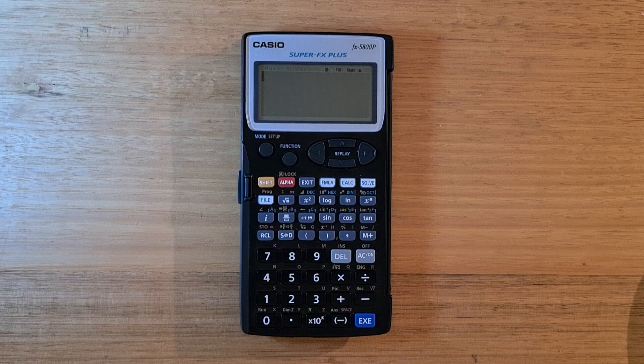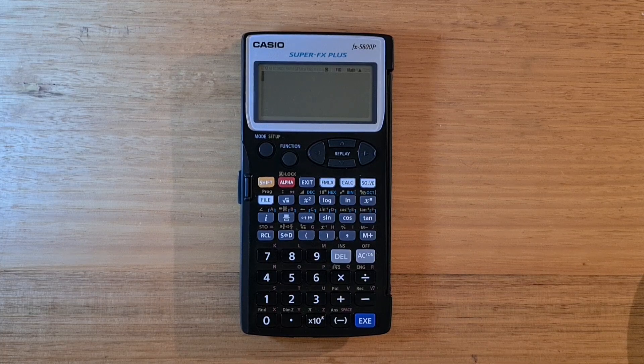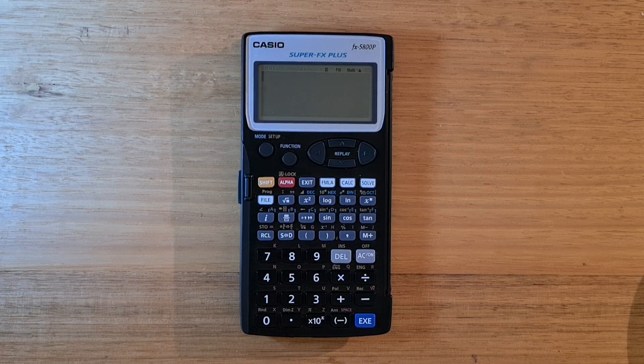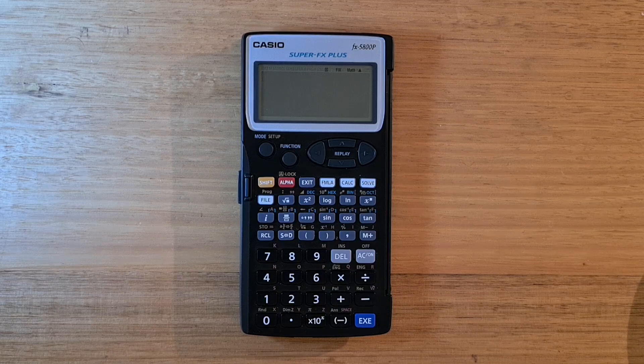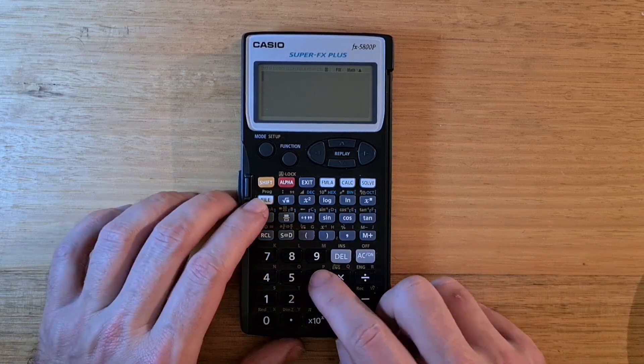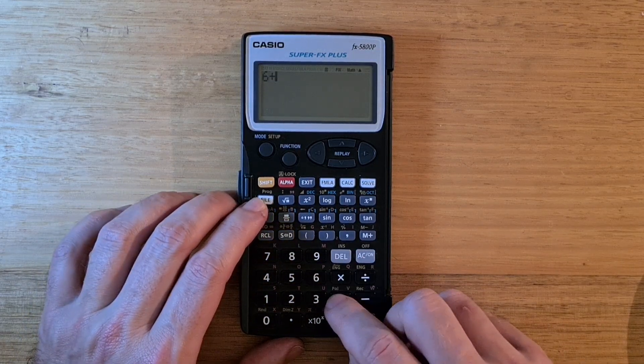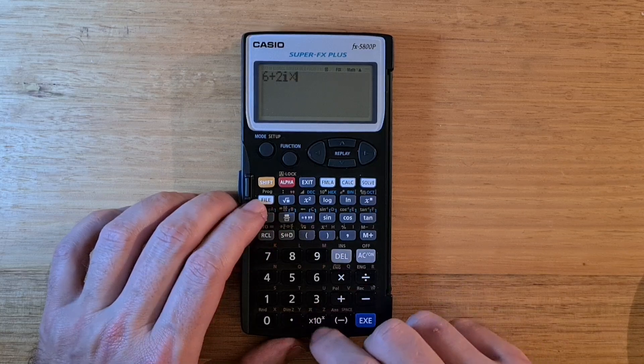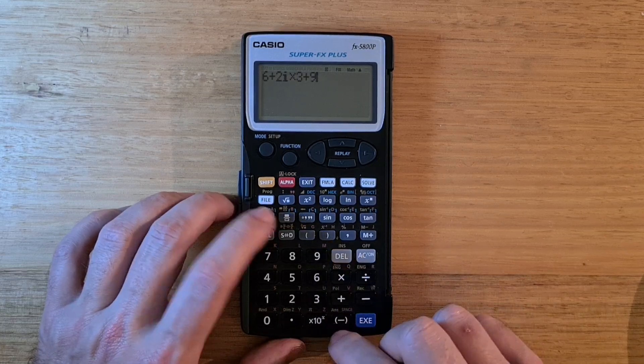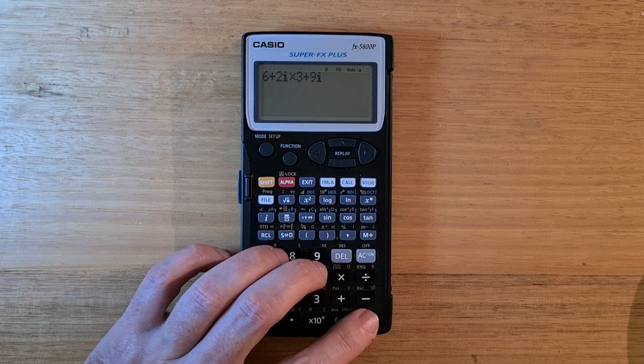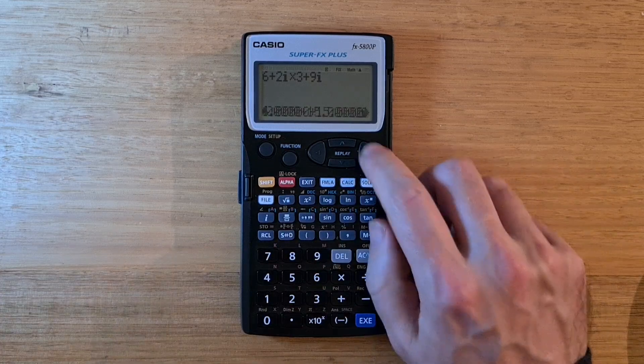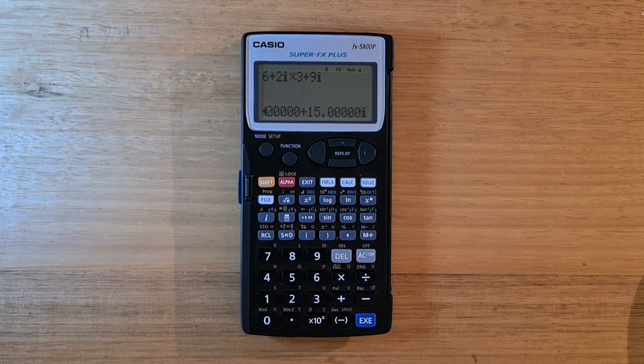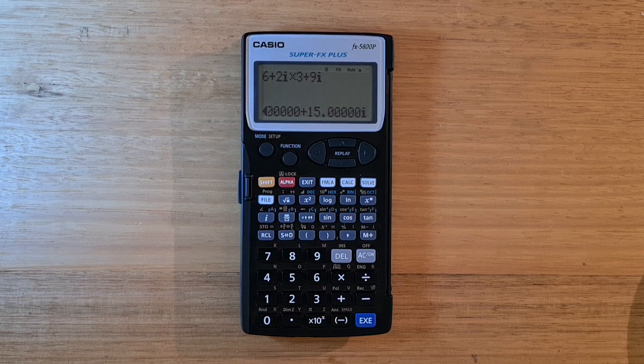So the 5800P supports complex operations in an integrated way. There's no special mode. So for example, if I wanted to multiply 6 plus 2i times 3 plus 9i, I just enter that operation and hit exe in a fairly natural way. But the complex support is a little bit limited.